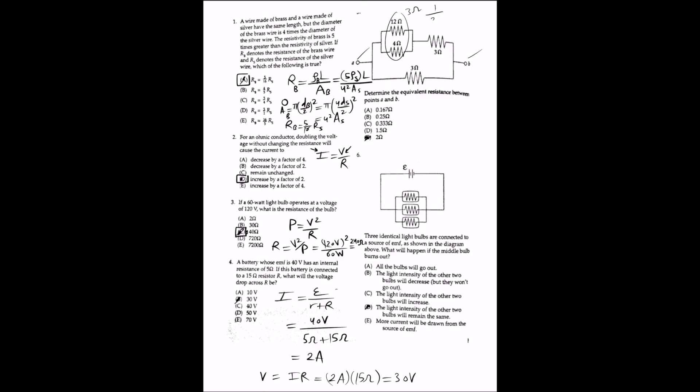For question 5, determine the equivalent resistance between points A and B. The two parallel resistors are equivalent to 3 ohms, since 1/12 + 1/4 = 1/3. That 3-ohm equivalent is in series with another 3-ohm resistor, giving 6 ohms. This 6-ohm resistor is then in parallel with a 3-ohm resistor: 1/6 + 1/3 = 1/2, so the overall equivalent resistance is 2 ohms. The answer is E.